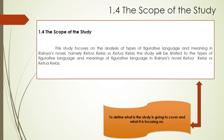Typically, the information you need to include in the scope will cover: the general purpose of the study, the population or sample that you are studying, the duration of the study, the topics or theories that you will discuss, and the geographical location covered in the study.